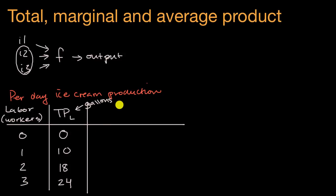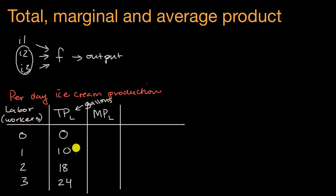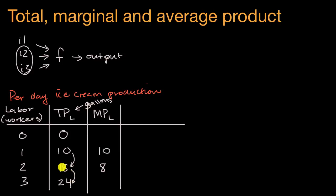Now I'm going to introduce marginal product of labor. The way to think about marginal is: for every increment of one thing, how much more of the other thing do you get? So our marginal product of labor says for each incremental unit of labor — each incremental person working per day — how many more gallons of ice cream am I producing? When I go from zero to one worker, I'm able to produce 10 more gallons. Going from one to two workers, I go from 10 to 18 gallons, so that second person gets me an incremental eight gallons per day. Going from two to three people, my total product goes up by six, so my marginal product of labor for that third worker is six.